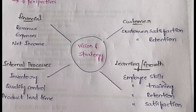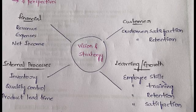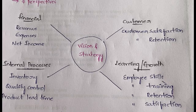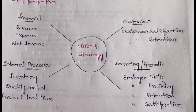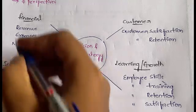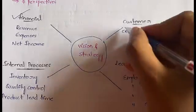First comes the Financial perspective. In financial, all revenue-related and expense-related items are covered. Revenue is the money you're getting, expenses are the money you're spending, and net income is what is left after all expenditures. All money-related and financial-related aspects fall under this perspective.